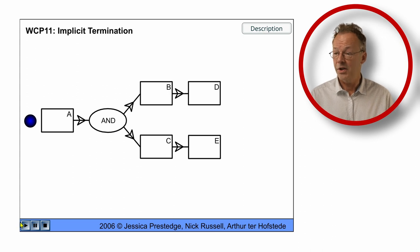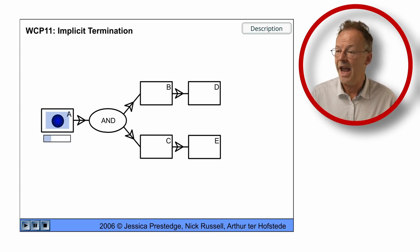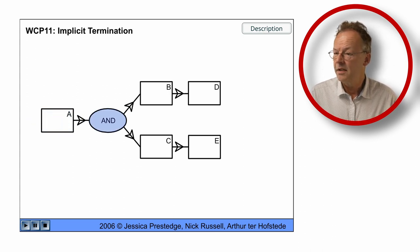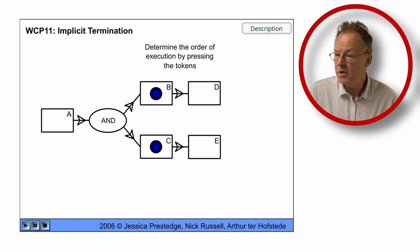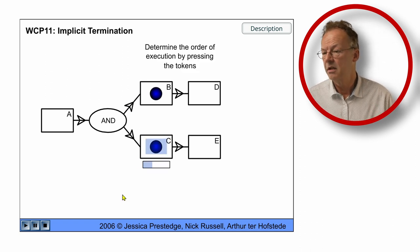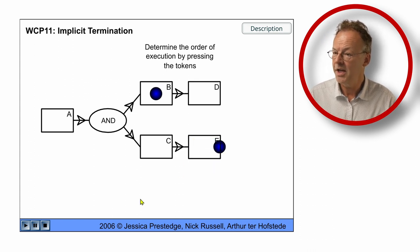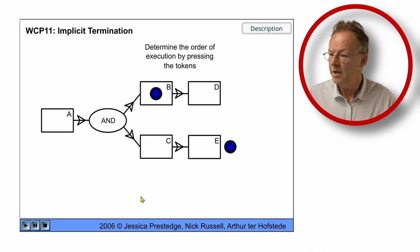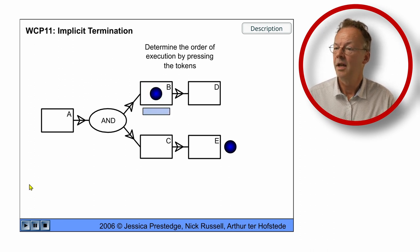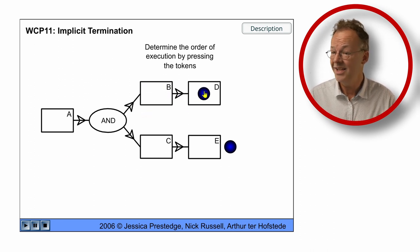Here we start with A and then we have the AND split and now the process continues, so we continue with C, then we finish E and so this branch is terminated and then we complete B and finally we complete D.